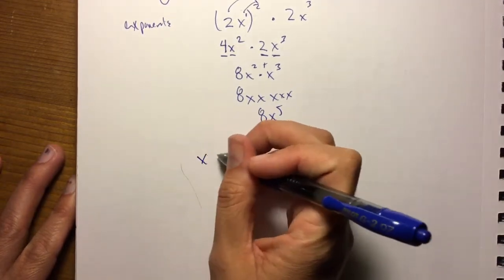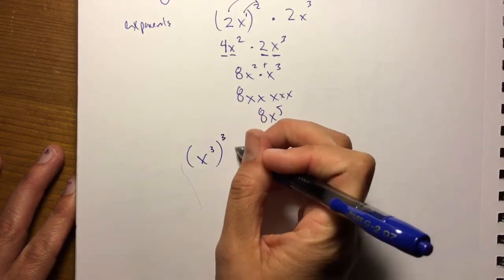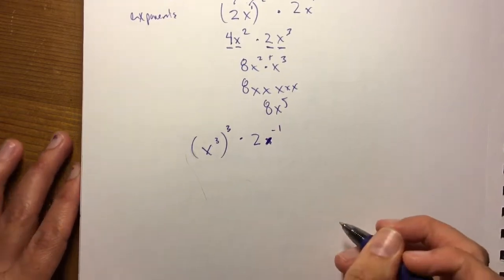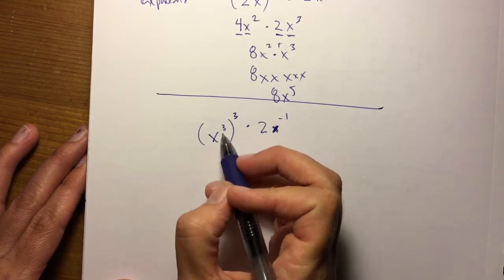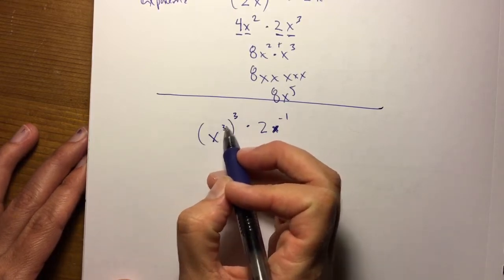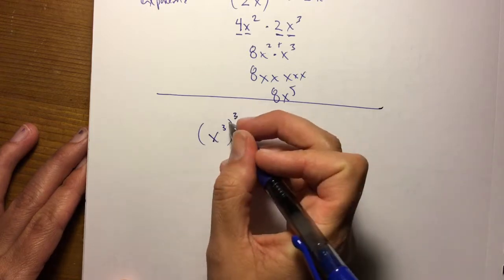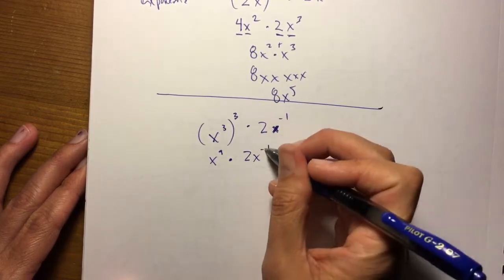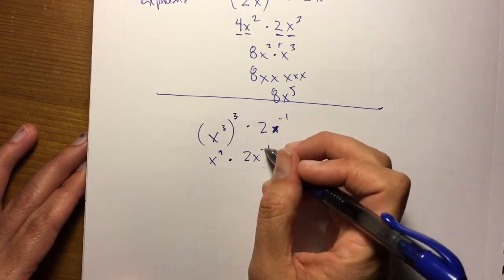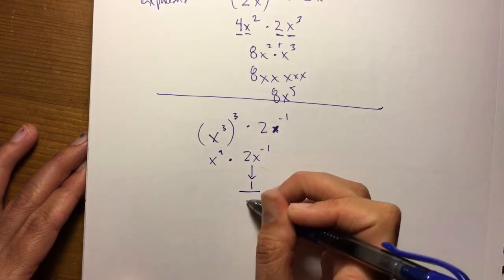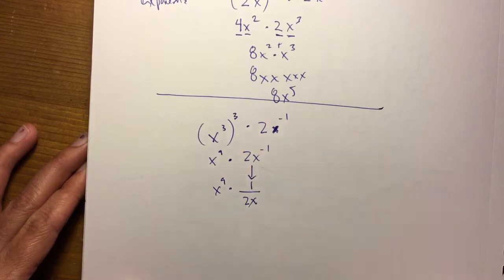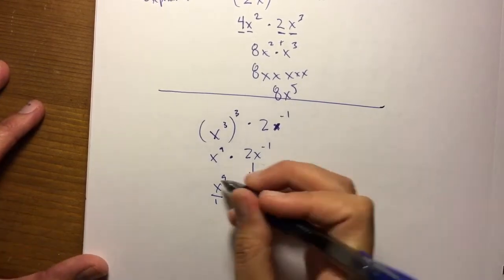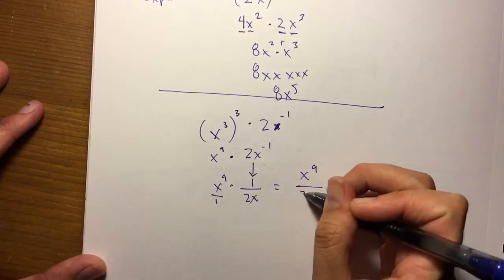Remember that if you have x to the third raised to the third times 2x to the negative 1, let's deal with these in parts. If we have something to an exponent and we raise that to another exponent, we're going to multiply those exponents, so this becomes x to the ninth. Over here we have times 2x to the negative 1 — that negative makes it a fraction, so that becomes 1 over 2x. And then we still have x to the ninth, which is over 1, so we can make it x to the ninth over 2x.